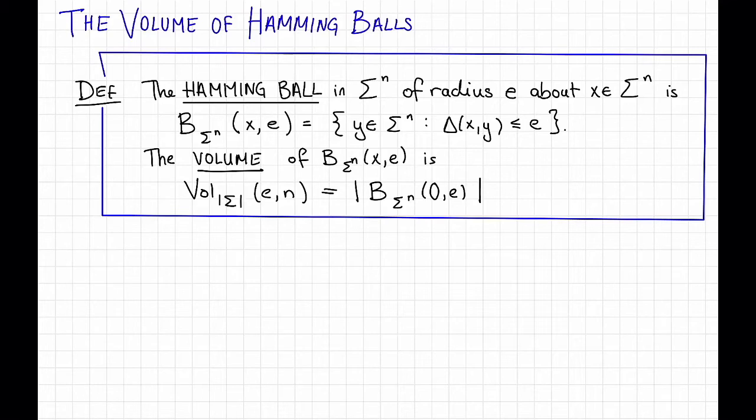Just as an aside, sometimes when I write this notation I might omit the sigma to the n when it's clear from context and I'll try not to but I might also accidentally switch up the order of these parameters, but I'll try not to. Hopefully whenever I write something like this it'll be clear from context what I mean, what's the center and what's the radius. I might also instead of an e write a number between zero and one to indicate relative Hamming distance rather than absolute Hamming distance.